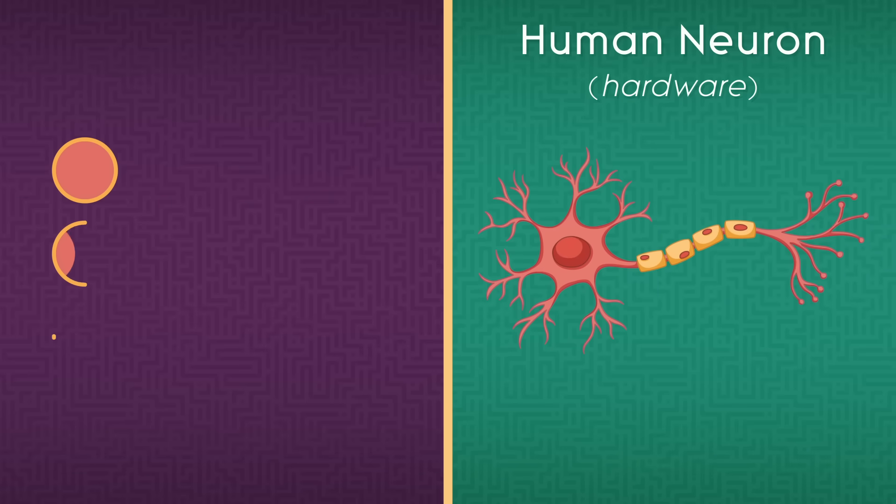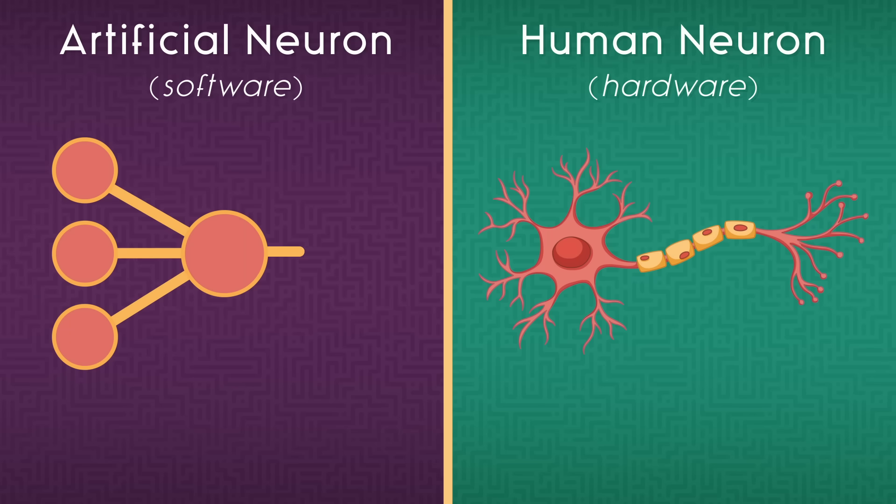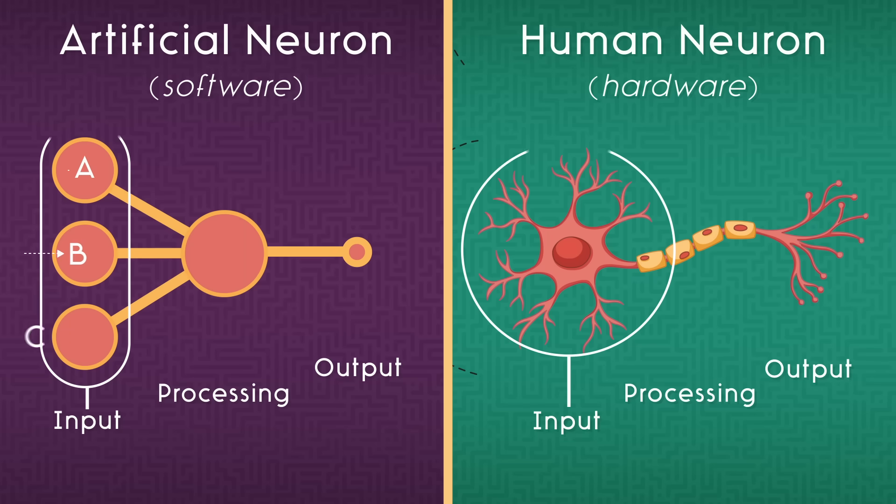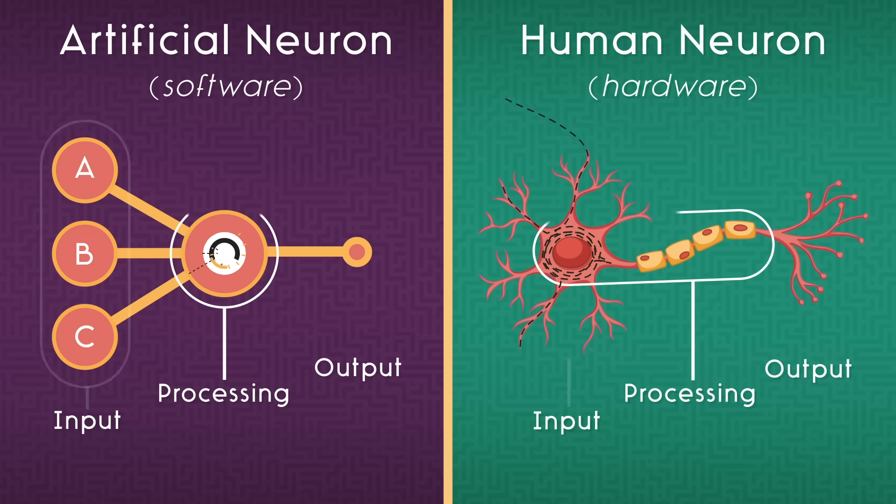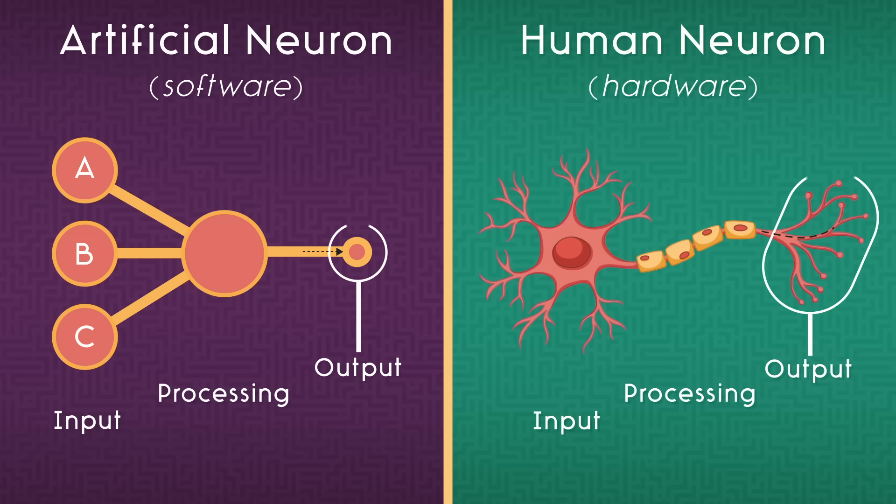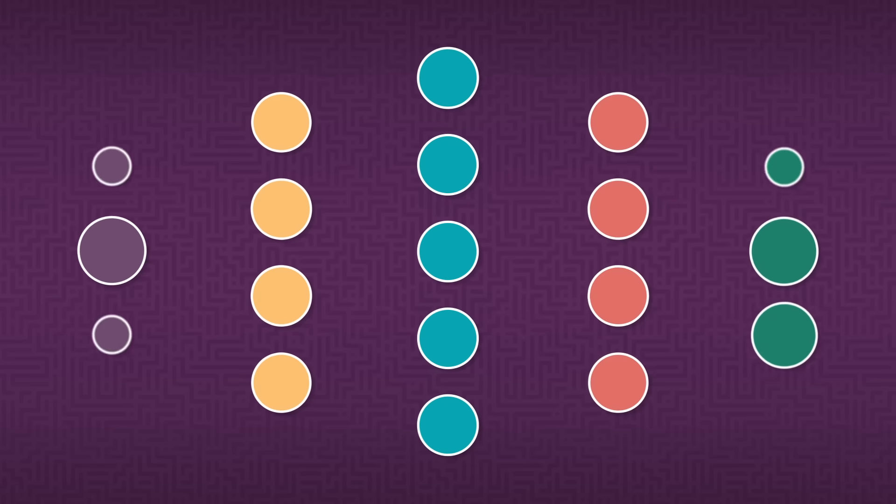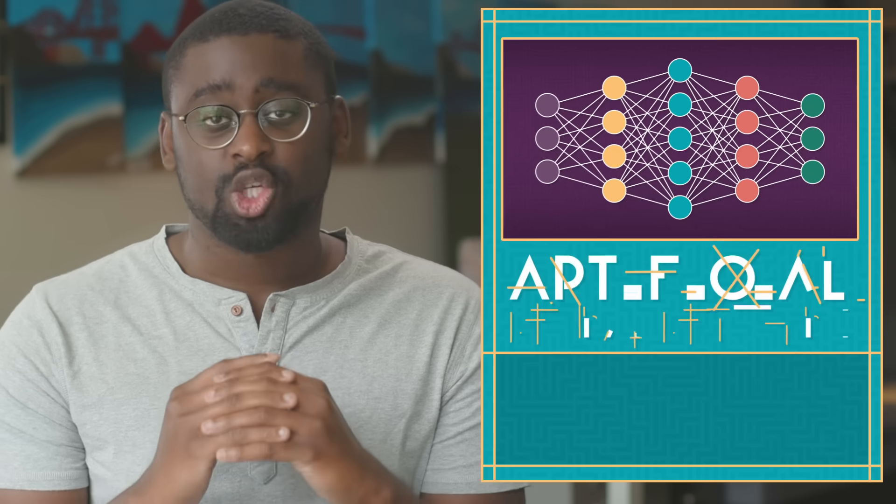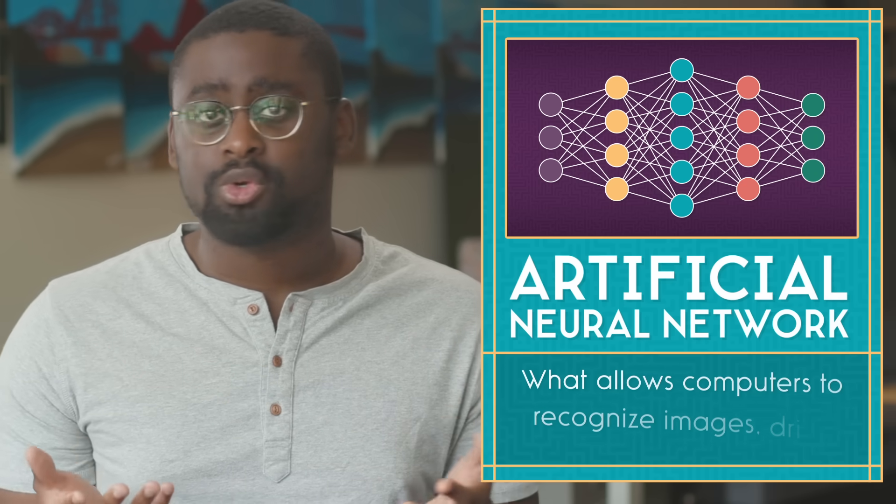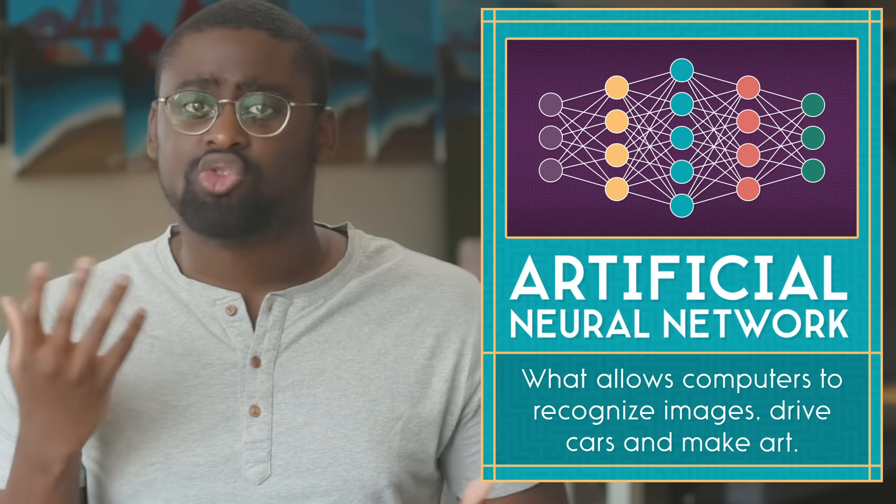Early AI scientists decided to mimic human neurons by making their own simple artificial neurons in software. Nothing fancy, just multiple signals going in as inputs, passing through the neuron and getting combined and processed by some simple math into a new signal going out. And it's a good start. But one neuron alone doesn't do much. The full potential of this idea is only unleashed when the artificial neurons are connected together to make an artificial neural network. This is what allows computers to recognize images, drive cars, and make some truly weird art.